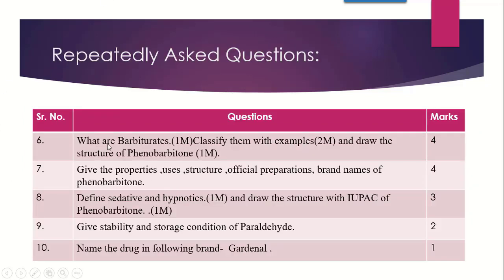Question 6: what are barbiturates? Here you are supposed to describe barbiturates — not just the definition but explain diagrammatically the fusion units of barbiturates, how barbituric acid is formed, and the derivatives of barbituric acid. 'What are barbiturates' carries 1 mark, the classification carries 2 marks, and drawing the structure of Phenobarbitone is again asked. The question 'what are barbiturates — classify them' carries 4 marks in total.